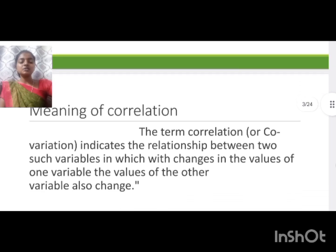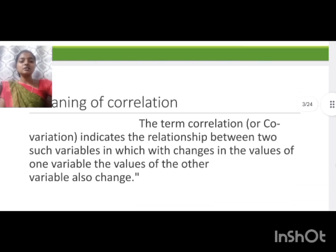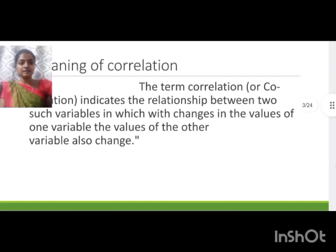Meaning of correlation: Correlation indicates the relationship between two variables. If one variable changes or increases, the other variable also increases.